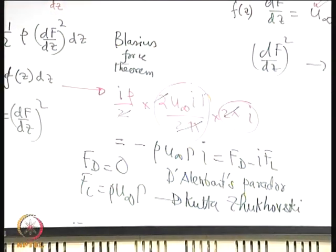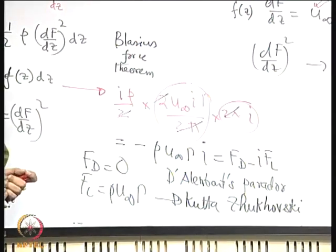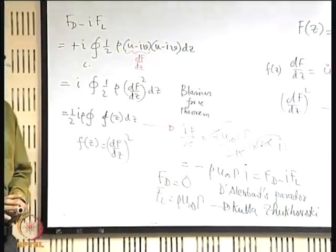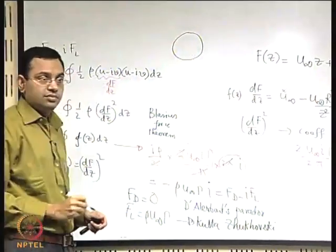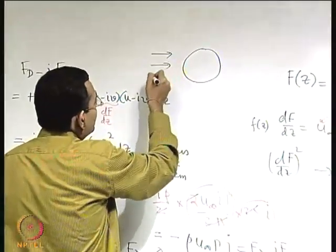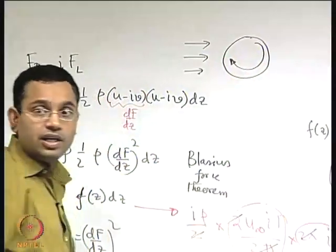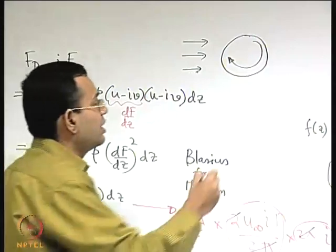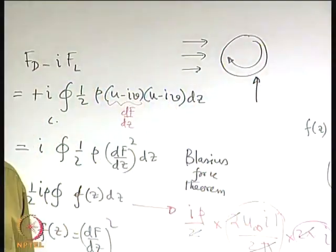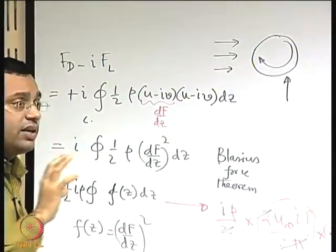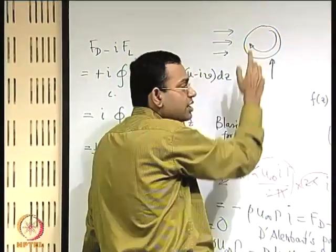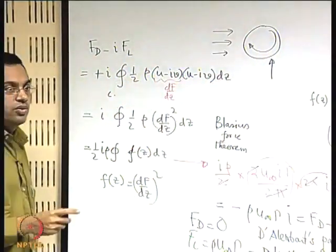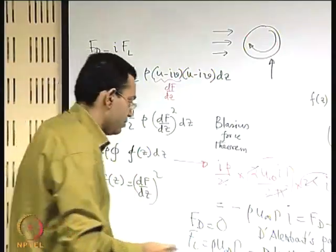Physically, if you have a circular cylinder in uniform flow and make it rotate, a lift force is generated perpendicular to the flow. Replacing the cylinder with a sphere qualitatively gives the same effect — a spinning ball experiences a force perpendicular to its motion, which is the topspin of a ball. This effect is known as the Magnus effect in fluid dynamics.